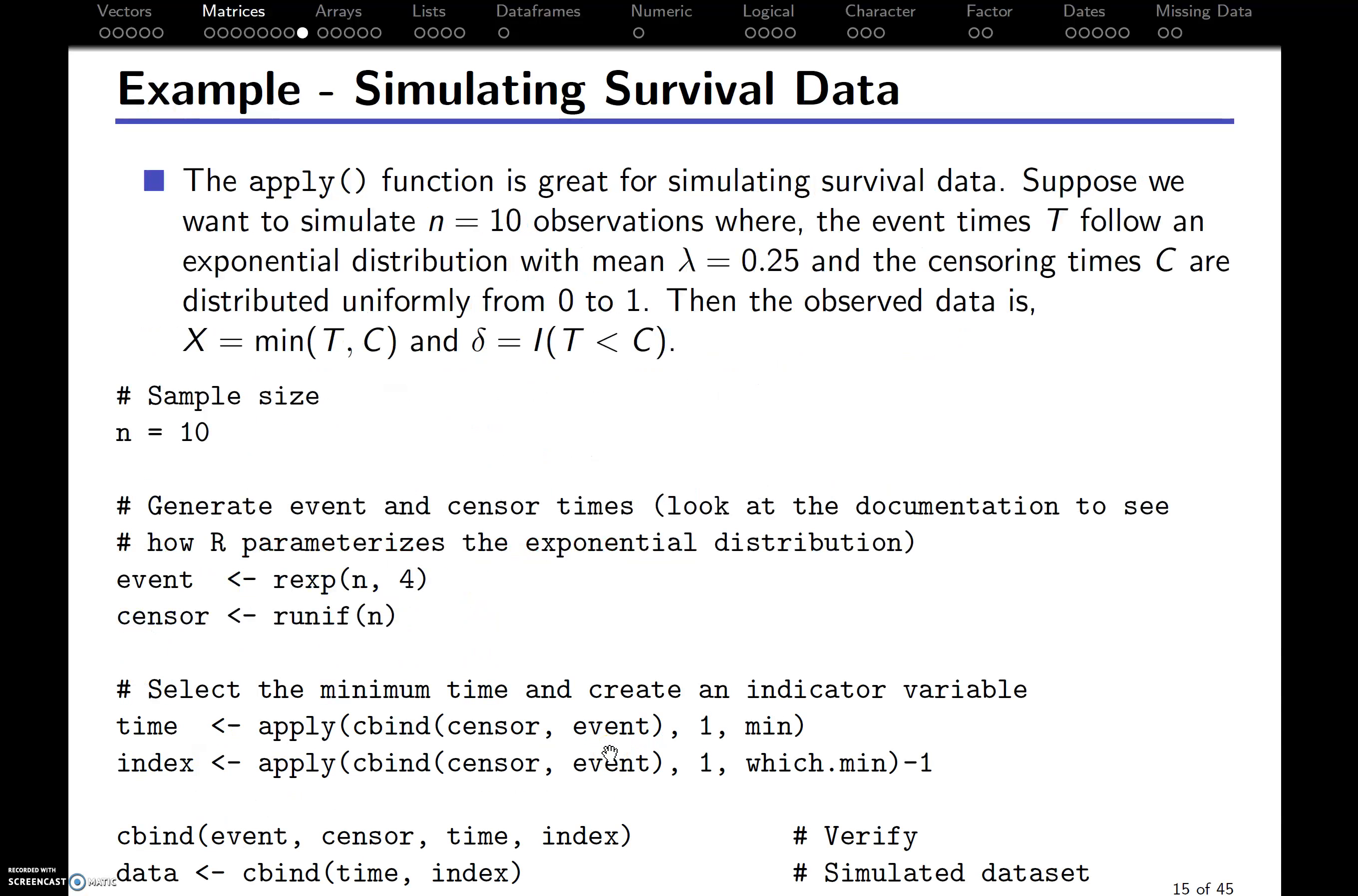There's actually a lot more sophisticated uses you can make. So, for example, if we're going to be simulating some data, the apply function is really great as a simulation tool. And we'll get to simulation later in the course. So let's say we want to simulate n = 10 observations where the event times T follow an exponential distribution with a mean of lambda = 0.25. You may or may not be as familiar with this model as everybody in the class, but that's okay. We're going to have some censoring times that are uniformly distributed from zero to one. So then the observed data is going to be the minimum of whatever time is generated using the exponential distribution model with mean 0.25 or the censoring time. So it's going to be the minimum of those two. And delta is going to be an indicator function that tells me when T is smaller than the censoring time.